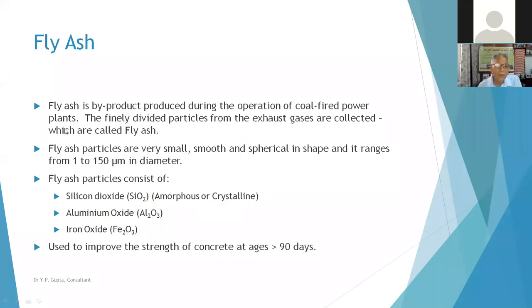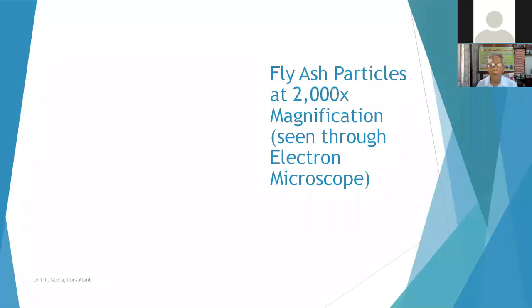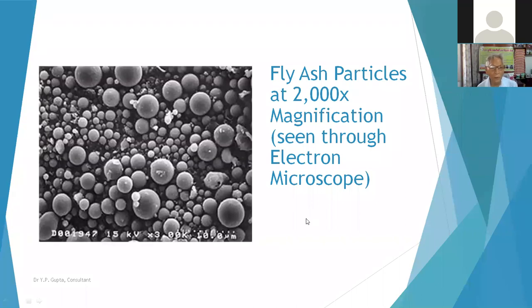Fly ash is a by-product of coal-fired power plants, which is finely divided from exhaust gases. Collected particles are very small, smooth, and spherical in shape, ranging from 1 to 150 microns in diameter. Fly ash particles consist of silicon dioxide, aluminum oxide, and iron oxide, and can be used to improve the strength of concrete at ages even greater than 90 days. It has become a very common material and is used widely in the cement industry to make PPC cement.